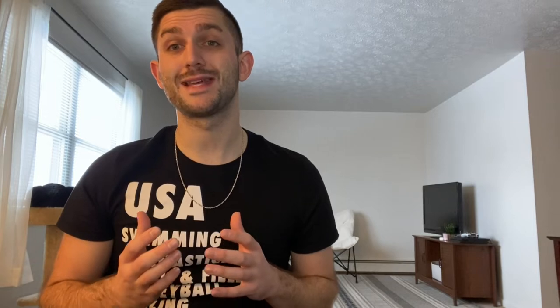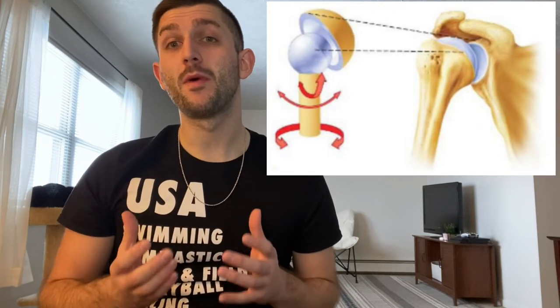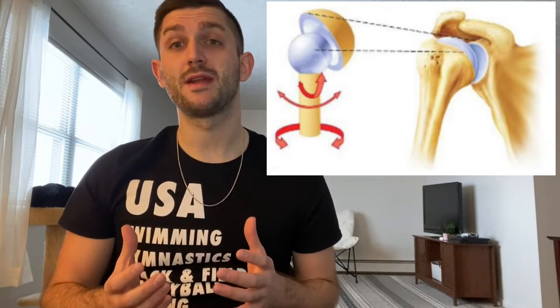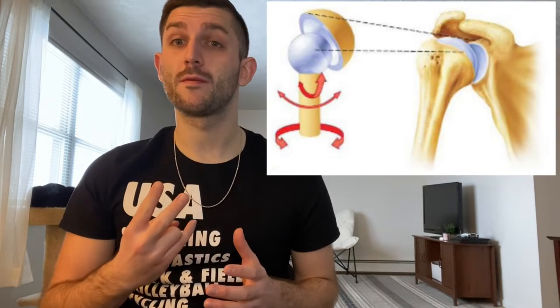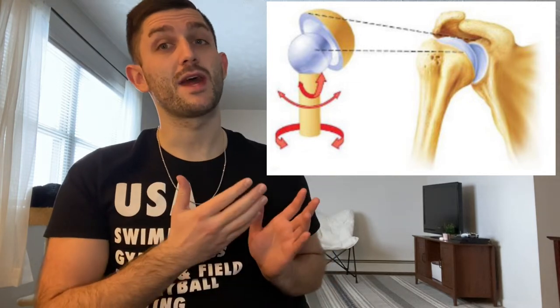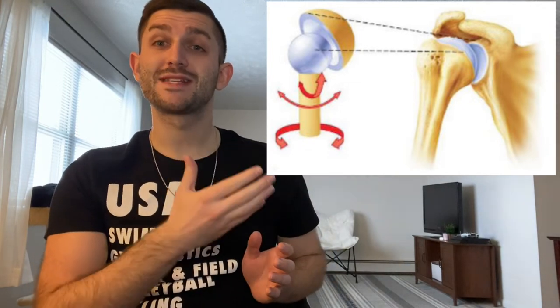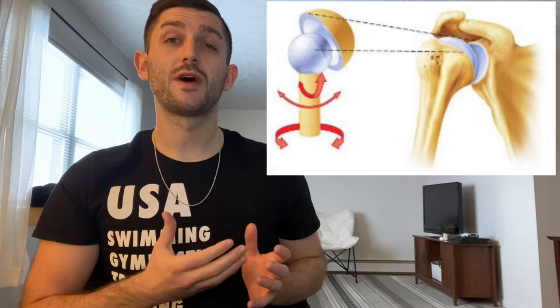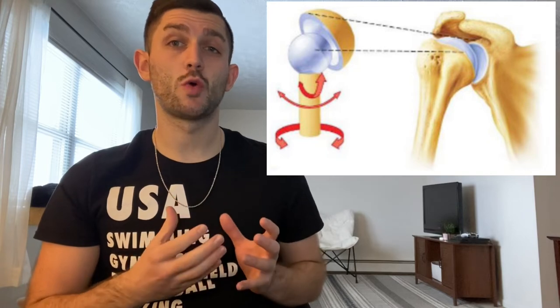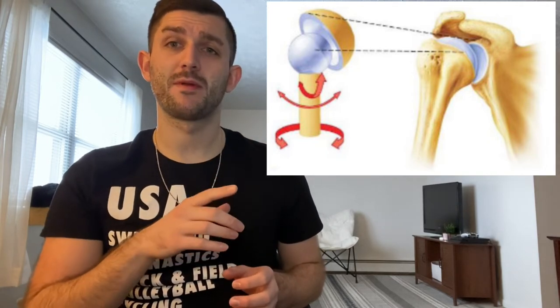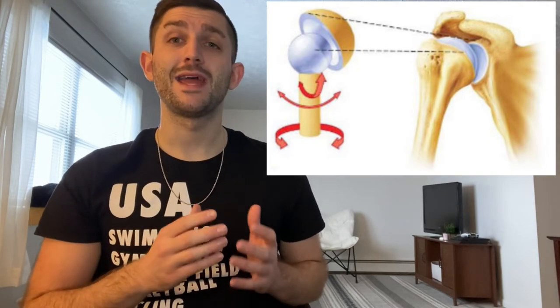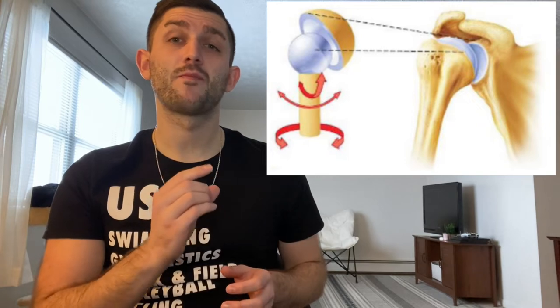Before we go any further, I have to do a brief anatomy lesson. The shoulder complex is referred to as a ball and socket joint. The ball and socket joint is made up of two different bones. As you can see here, we have the humerus, which is that long bone, and we have the scapula, otherwise referred to as the shoulder blade, which is that triangular shaped bone. In between the two sits the labrum, which is a thin piece of cartilage.